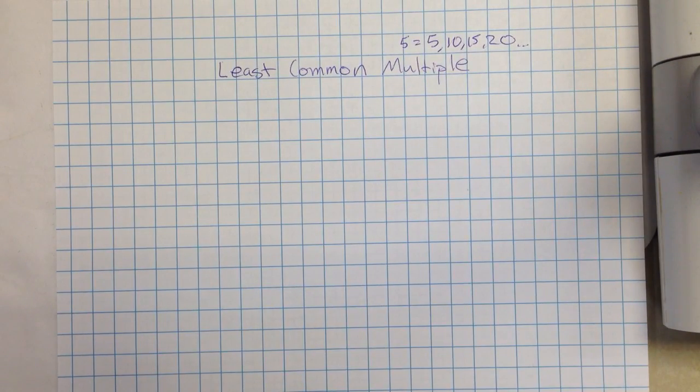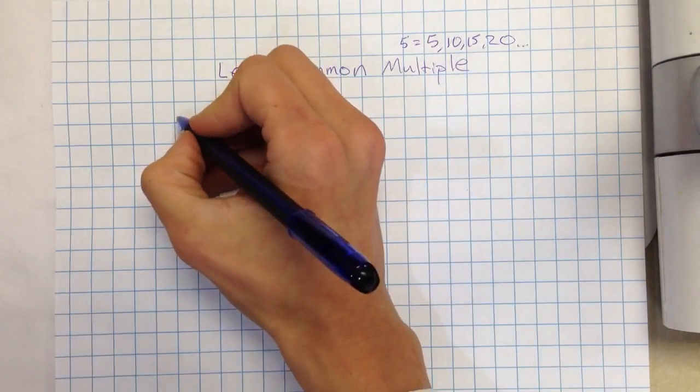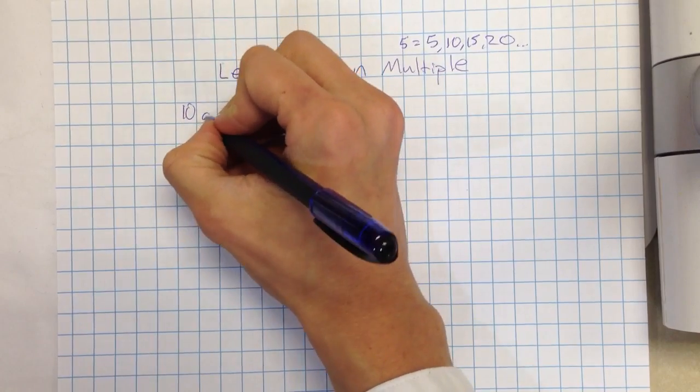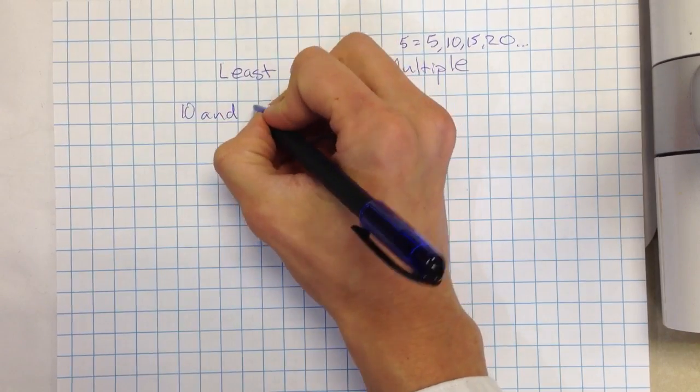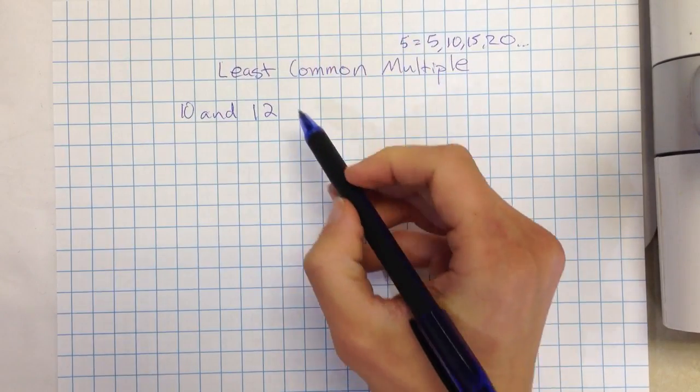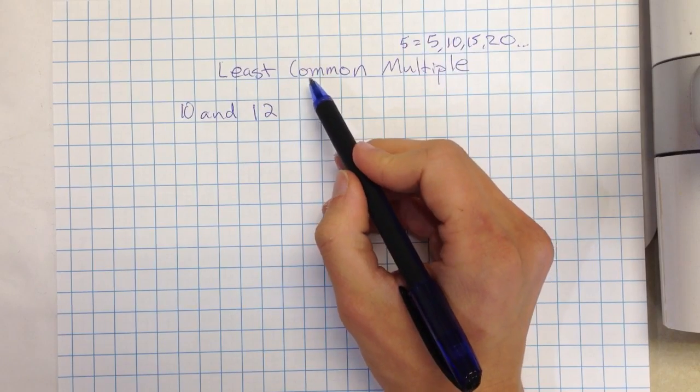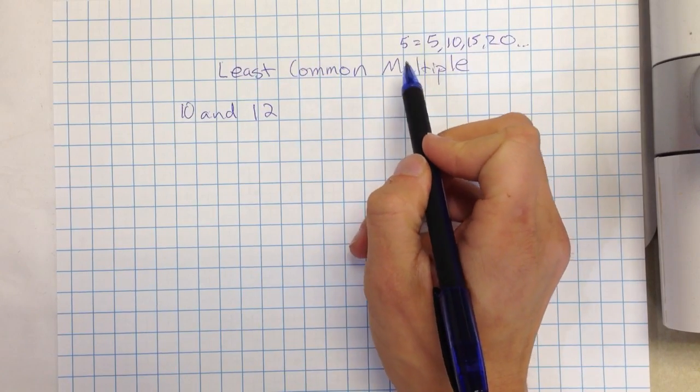So one way to find the least common multiple is simply by understanding what it means and just listing multiples. We call that method one today in class. So let's say I had the numbers ten and twelve, and I wanted to find what's the smallest number that these are going to have in common that is a multiple of both.